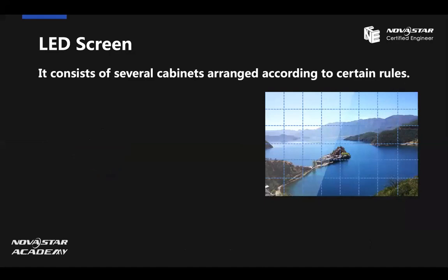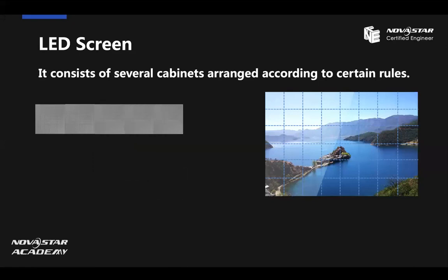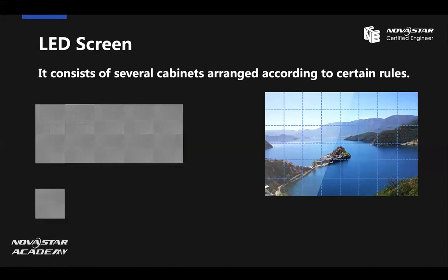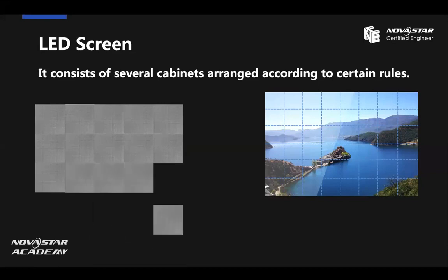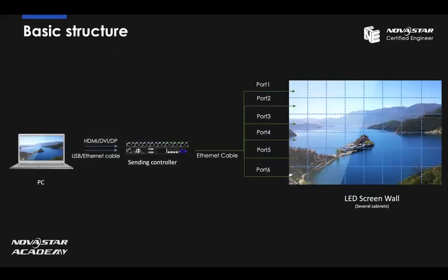LED cabinet is composed of many LED modules, and the LED screen is composed of many LED cabinets using the same principle. So for the LED screen, it consists of several cabinets arranged together. Now we know how to set up the LED screen. If we want to show an image on the screen, then we need to set up the control system.